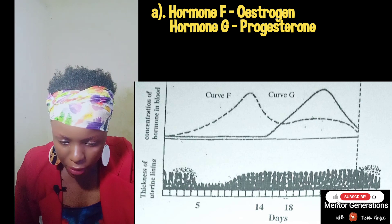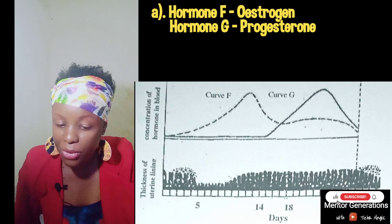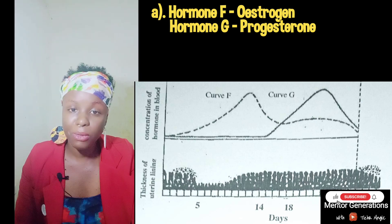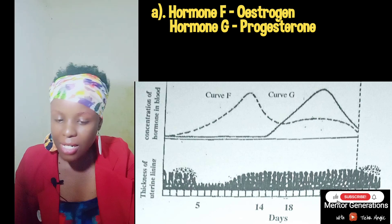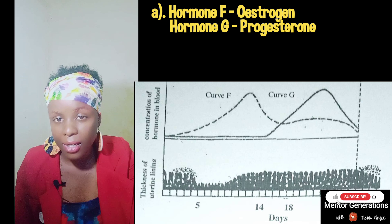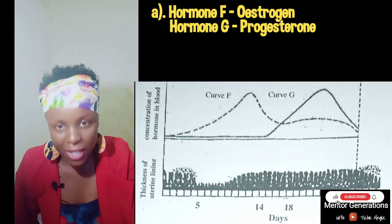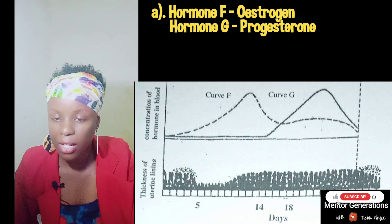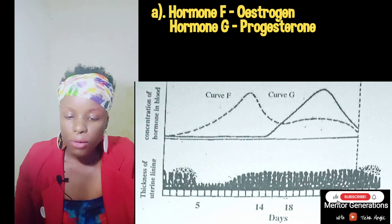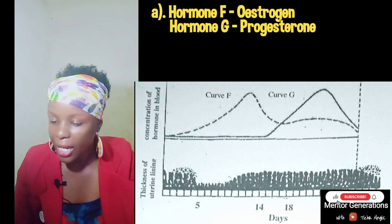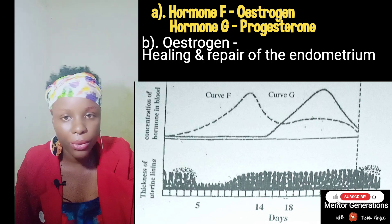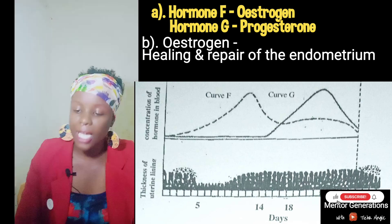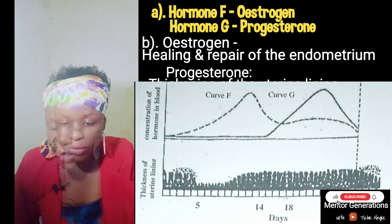The next question states: state the effects of the hormones named in A above on the lining of the uterus. Remember, this is a tied question — if you don't identify the hormones correctly in Part A, then you lose marks for Part B, even if the answers to Part B are correct. That's how important it is. The effect of F — estrogen — is that it promotes the healing and repair of the endometrium wall of the uterus. G — progesterone — causes the thickening of the uterine lining.